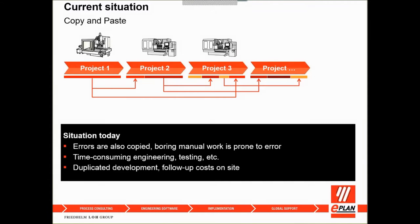In our basic project situation, it doesn't matter which type of project you're in — manufacturing, machining, or panel building. The most common situation is that from the first project, we normally copy and reuse parts and bring them forward to the second and third project. When this situation arises, most often the errors are also copied. Finding and rectifying those errors takes a lot of engineering hours.